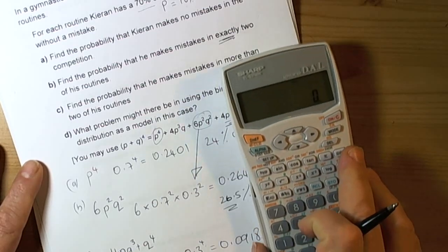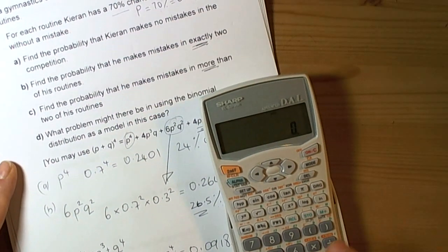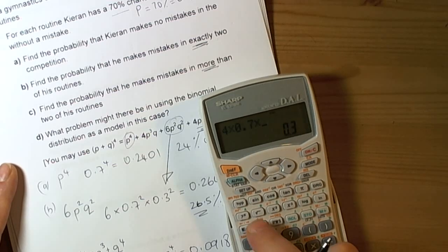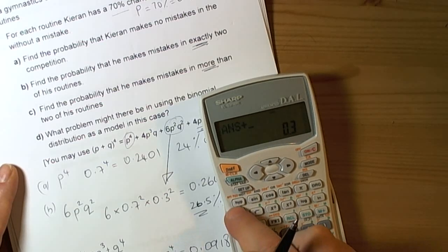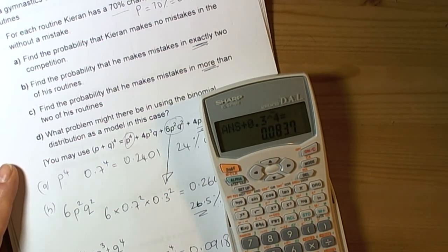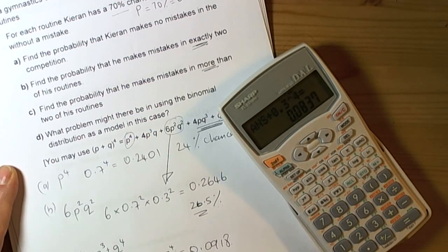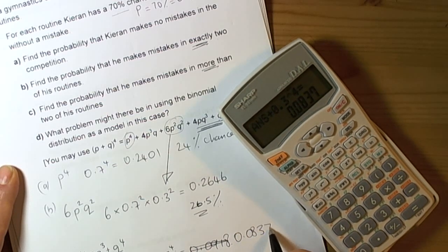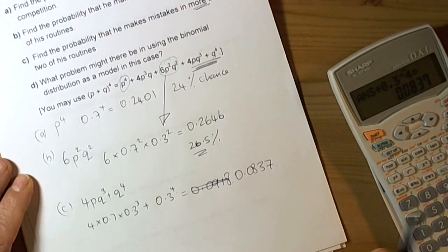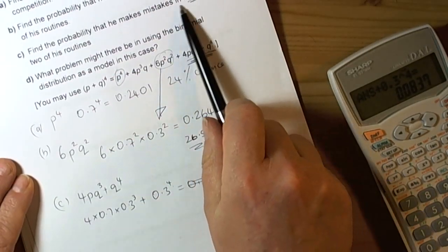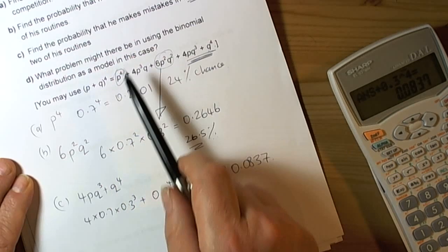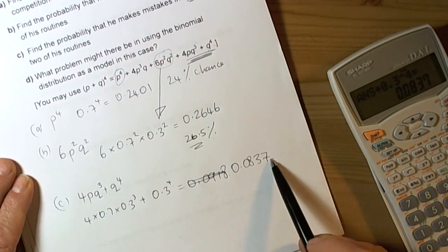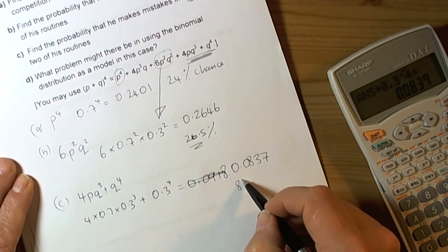Let me check that because I think I pressed the calculator twice. So 4 times 0.7 times 0.3 to the power of 3 plus 0.3 to the power of 4. The actual answer should be 0.0837. So the probability that he makes mistakes in more than two of his routines is 0.0837. Quite a small percentage, roughly around 8% of the time.